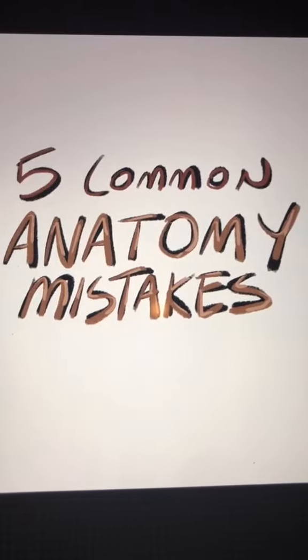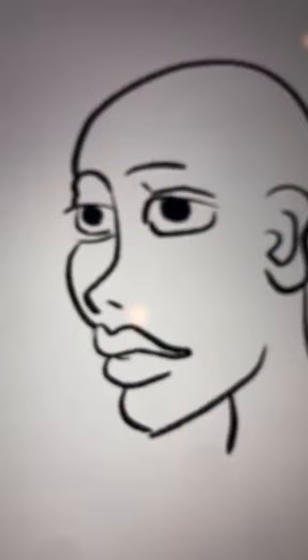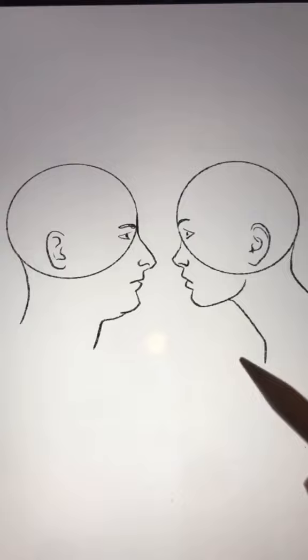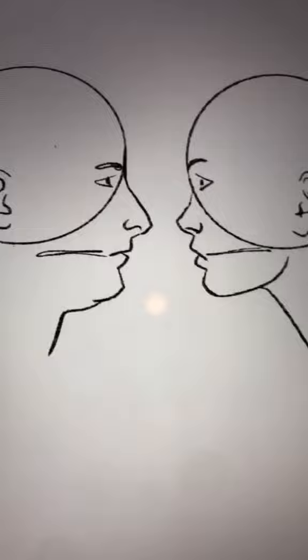Here's five common anatomy mistakes. Number one, completely forgetting about the forehead. We can't ignore this any longer. It's like you karate chopped a cerebellum. Just remember that the eye is usually in the middle of that guide circle, and the mouth is at the bottom.